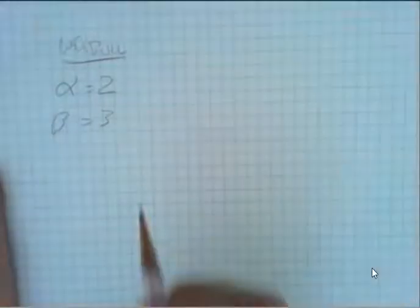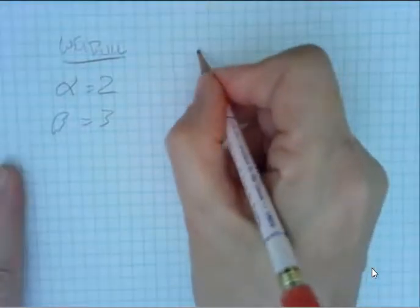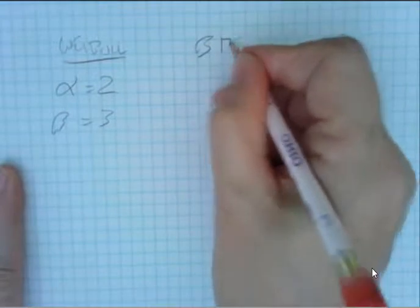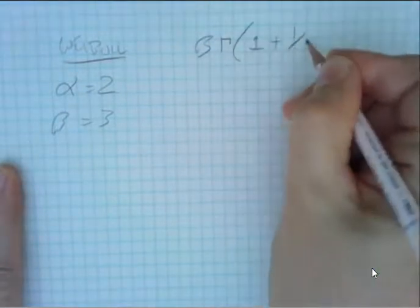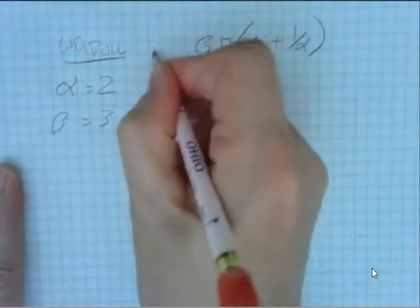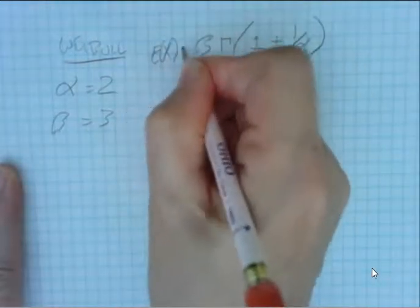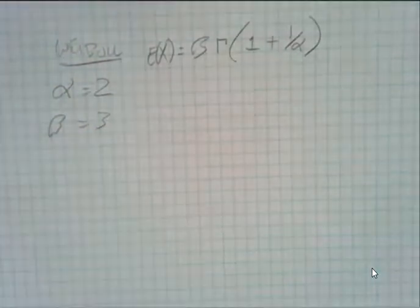So what I recommend people do is always start by just writing out the basic equation for the E of X. So beta times the gamma function of 1 plus 1 over alpha, and that is the expected value for a Weibull function regardless what alpha and beta are. So start by writing out the equations so you know you're in the right ballpark as you go through.